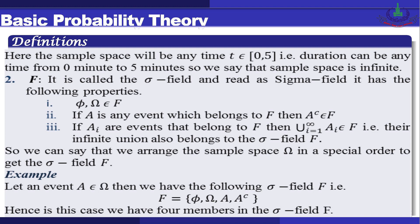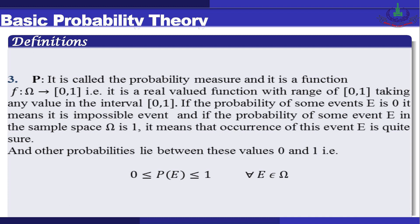The second member is F, called the sigma field. It has the following properties: (1) phi and omega both belong to F; (2) if A is any event belonging to F, then its complement A-complement also belongs to F; (3) if A_i are events belonging to F, then their infinite union from i=1 to infinity also belongs to F. We arrange the sample space in a special order to get the sigma field F. For example, if event A belongs to omega, then F = {phi, omega, A, A-complement}.